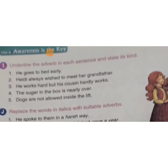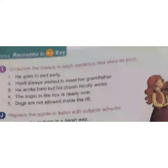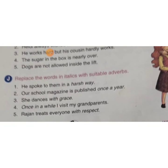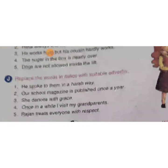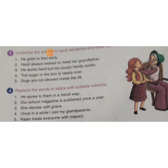Today in homework you will do exercise number I: underline the adverb in each sentence and state its kind — jo adverb aaye hain unko underline karna hai aur batana hai ki woh kaun sa type of adverb hai. Next, exercise number J: replace the word in italics with a suitable adverb — jo teerche words hain unhe replace karke suitable adverb lagana hai. For example: 'He spoke to them in a harsh way' — replace 'in a harsh way' with a suitable adverb. Today you will do both exercises. Okay, take care, have a nice day.